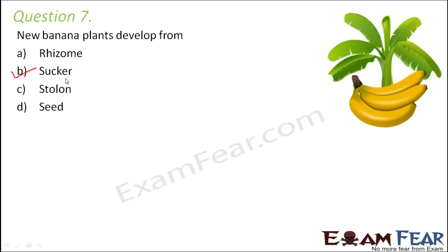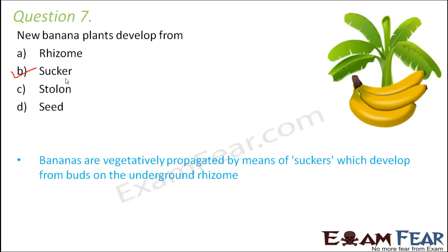The banana plant's true stem is the rhizome, characterized by horizontal underground growth, production of roots from multiple nodes, and production of clonal plants. The sucker is a lateral shoot that develops from the rhizome and emerges close to the parent plant, developing a leafy shoot and adventitious roots before separating from the mother plant. So new banana plants develop from the sucker, but suckers develop from buds on the underground rhizome.